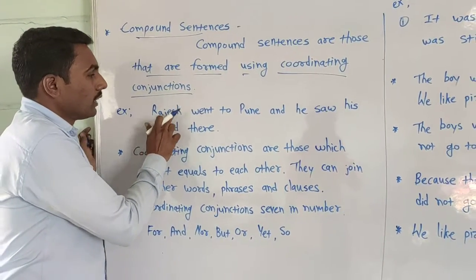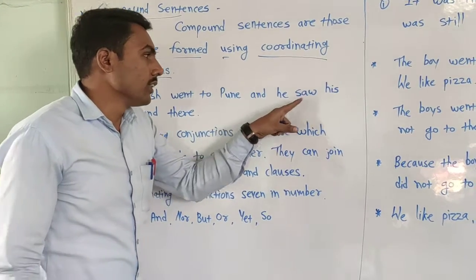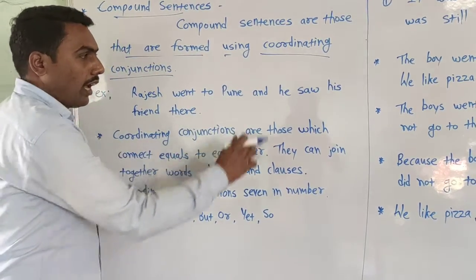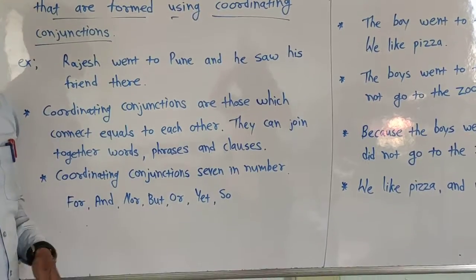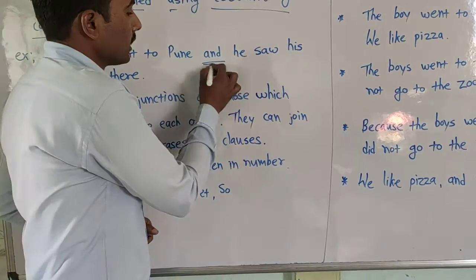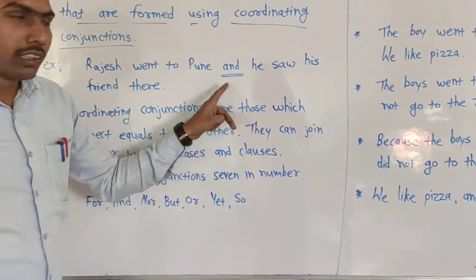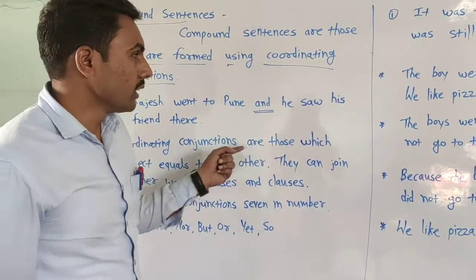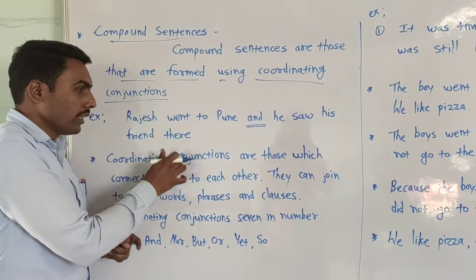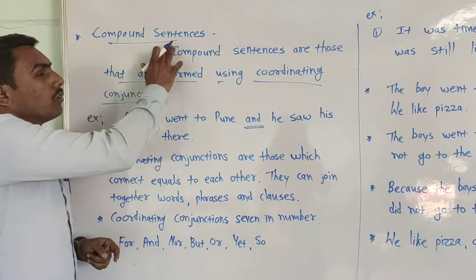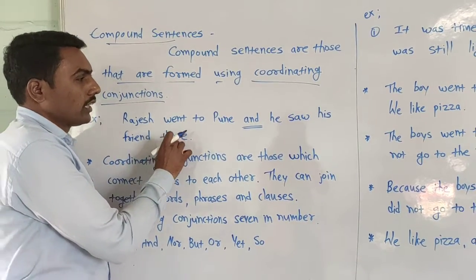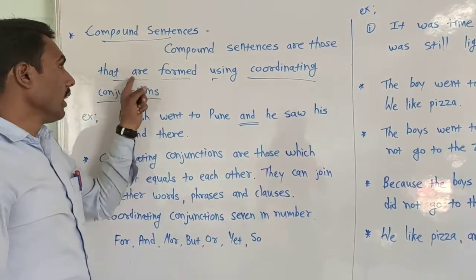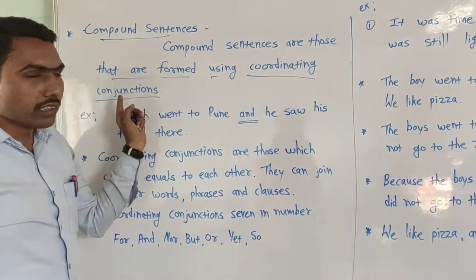For example, look here: 'Rajesh went to Pune and he saw his friend there.' In this example, there is one conjunction — that is called a coordinating conjunction. That joins two equal parts or words. That is called a coordinating conjunction, so this sentence is a compound sentence.